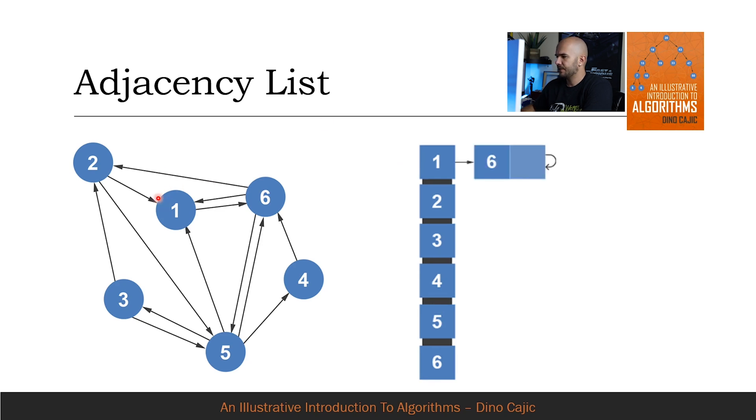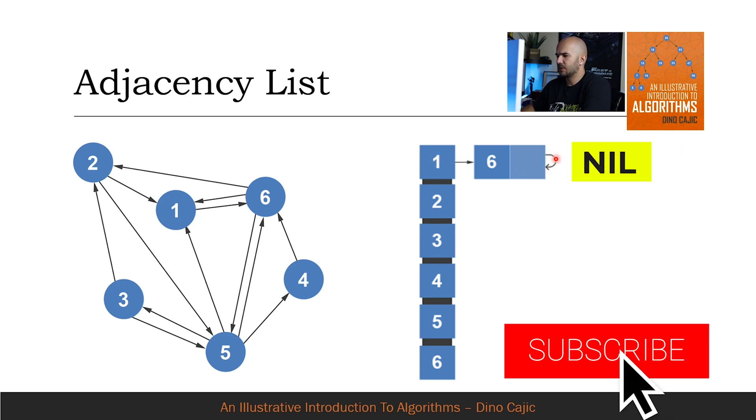Going through the graph, vertex 1 is connected to vertex 6, so we update the adjacency list for vertex 1. The loop at the end indicates that there are no additional nodes that vertex 1 points to, so it points to nil.